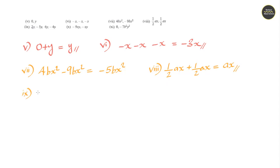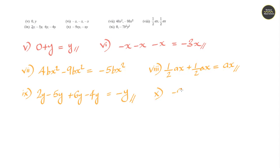Question number 9: 2y minus 5y plus 6y minus 4y. First: 2y minus 5y is minus 3y. Minus 3y plus 6y is positive 3y. Minus 4y gives the answer minus y. Question number 10: minus 9xy minus xy. That is minus 9 minus 1, giving minus 10xy.